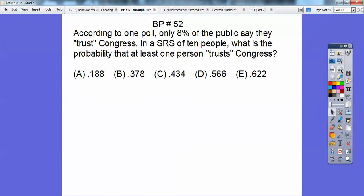According to one poll, only 8% of the public say they trust Congress. Well, that means 92% of the people don't trust Congress. So in an SRS of 10 people, what's the probability that at least one person trusts Congress? Well, that's the same as the complement, which is one minus the probability that none trust Congress. So if 8% say they trust Congress, then 92% say they don't trust Congress. So I'm going to put in 92% right here, 0.92.